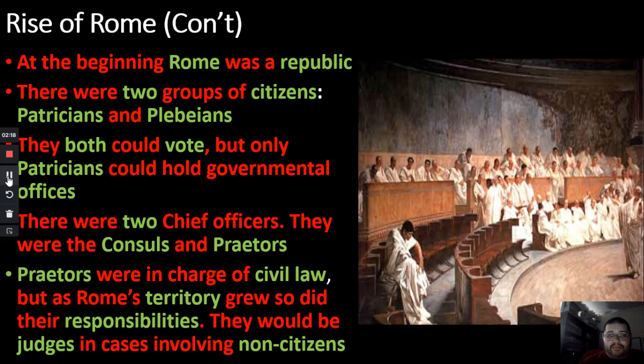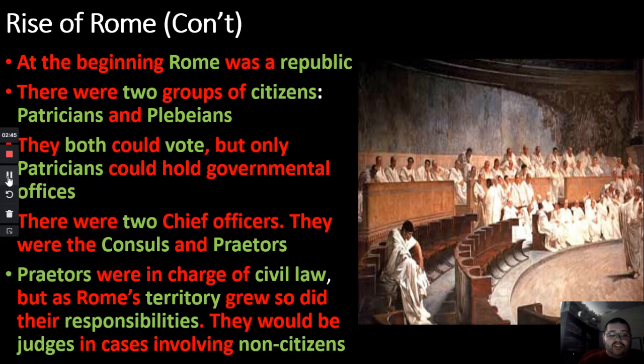There were two chief officers: the consuls and the praetors, also known as praetorians. The praetors were in charge of civil law — kind of like the police. As Rome's territory grew, so did their responsibilities. Eventually they would be judges in cases involving non-citizens, presiding over trials between citizens and non-citizens or between two non-citizens.